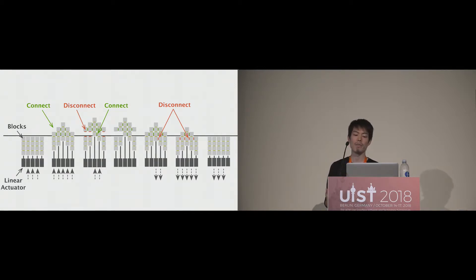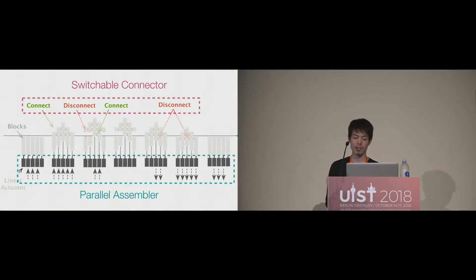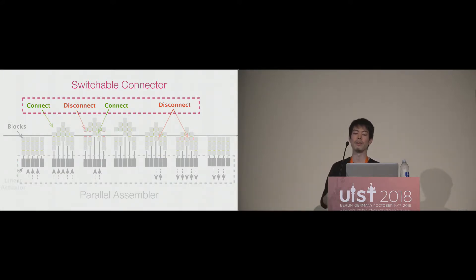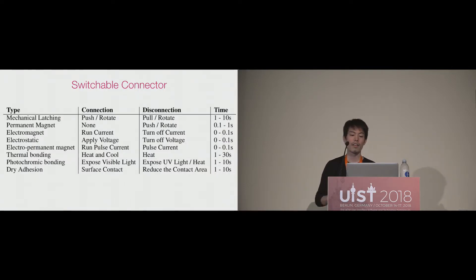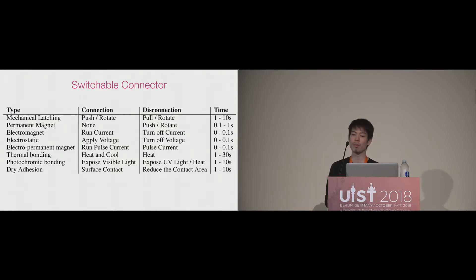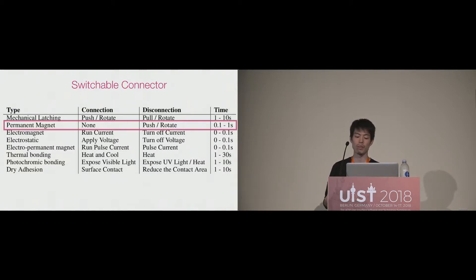To achieve this goal, dynamic 3D printing has two key design components: a switchable connector and a parallel assembler. The switchable connector is key to enabling reconstructable formation. Several connection mechanisms have been explored in prior work, including mechanical latching, permanent or electromagnetic connection, electrostatic, electropermanent magnets, thermal bonding, photochromic bonding, and dry adhesion. After exploring these options, we decided to further explore the permanent magnet for simple and low-cost connection and disconnection.